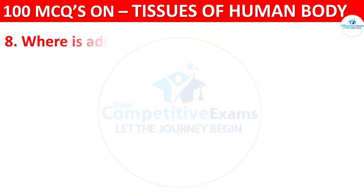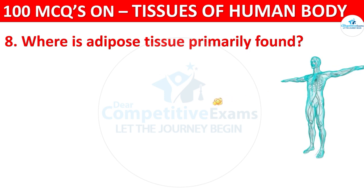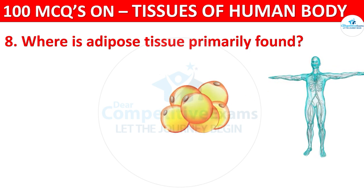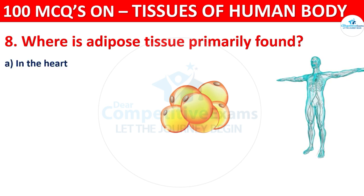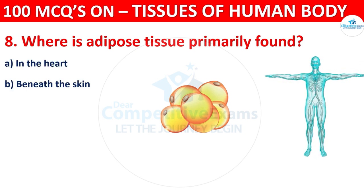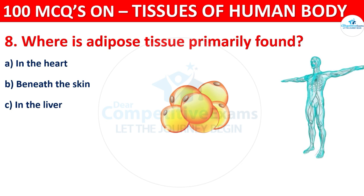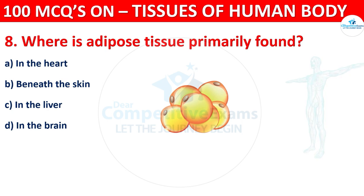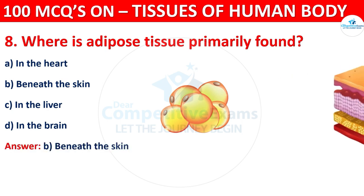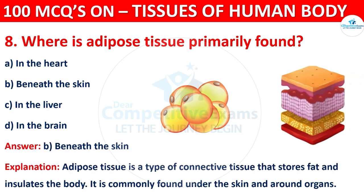Question number eight: where is adipose tissue primarily found? Options are in the heart, beneath the skin, in the liver, or in the brain. The correct answer is B, that is beneath the skin. Adipose tissue is a type of connective tissue that stores fat and insulates the body. It is commonly found under the skin and around the organs.